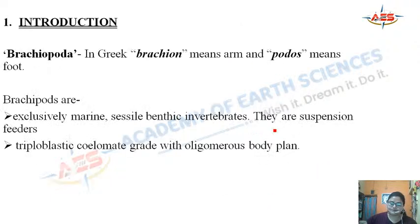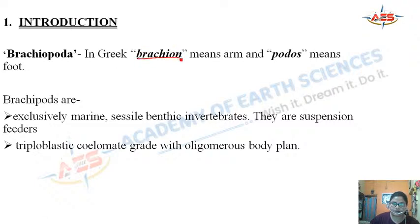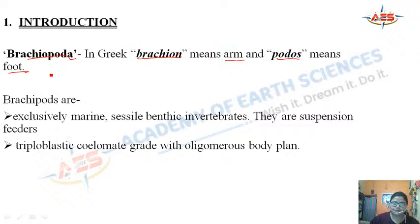The term Brachiopoda comes from the Greek words: Brachion, meaning arm, and Podos, meaning foot. That is where the word Brachiopoda came from.